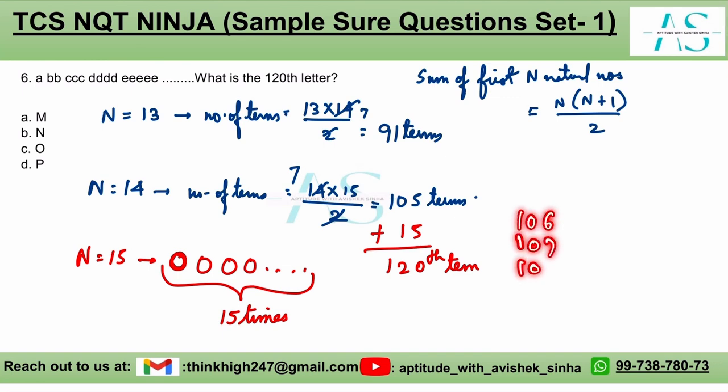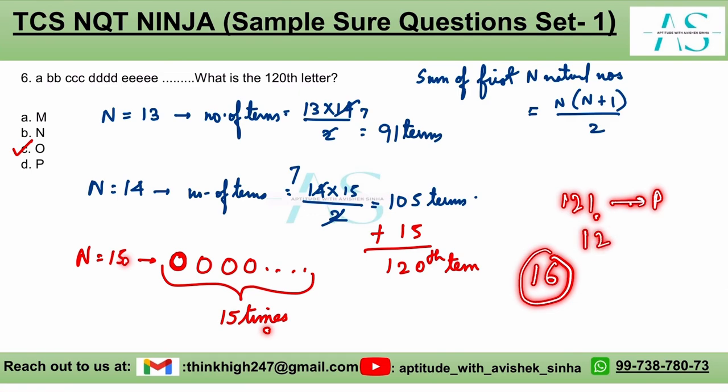So exactly the 120th term, or any term from 106, 107, 108 going up to the 120th term - any of these terms is O. So option C is our correct fit here. Now if I ask you what would be the 121st term? Here we have exhausted 15 and would be starting with 16, so the 121st term would be P, 122nd term would be P - how many times? 16 times. And that is how you can solve these types of questions.